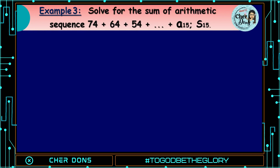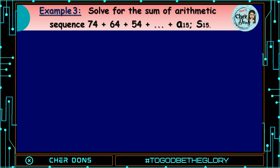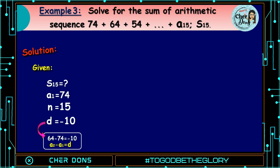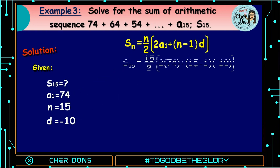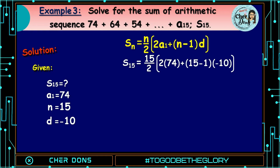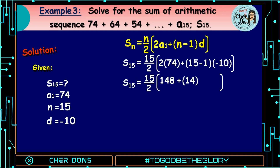Example number 3: Solve for the sum of the arithmetic sequence 74 plus 64 plus 54 plus ... up to a sub 15. We're looking for S sub 15. Given: S of 15 is unknown, a sub 1 is 74, n is 15, d is negative 10. Applying the formula: S of n is equal to n over 2 multiplied by (2 times a sub 1 plus quantity n minus 1 multiplied by d). Where 74 goes to a sub 1, 15 goes to n, and negative 10 goes to d. S of 15 is equal to 15 divided by 2 multiplied by (2 times 74, that is 148, plus quantity 15 minus 1, that is 14, multiplied by negative 10, that is negative 140).